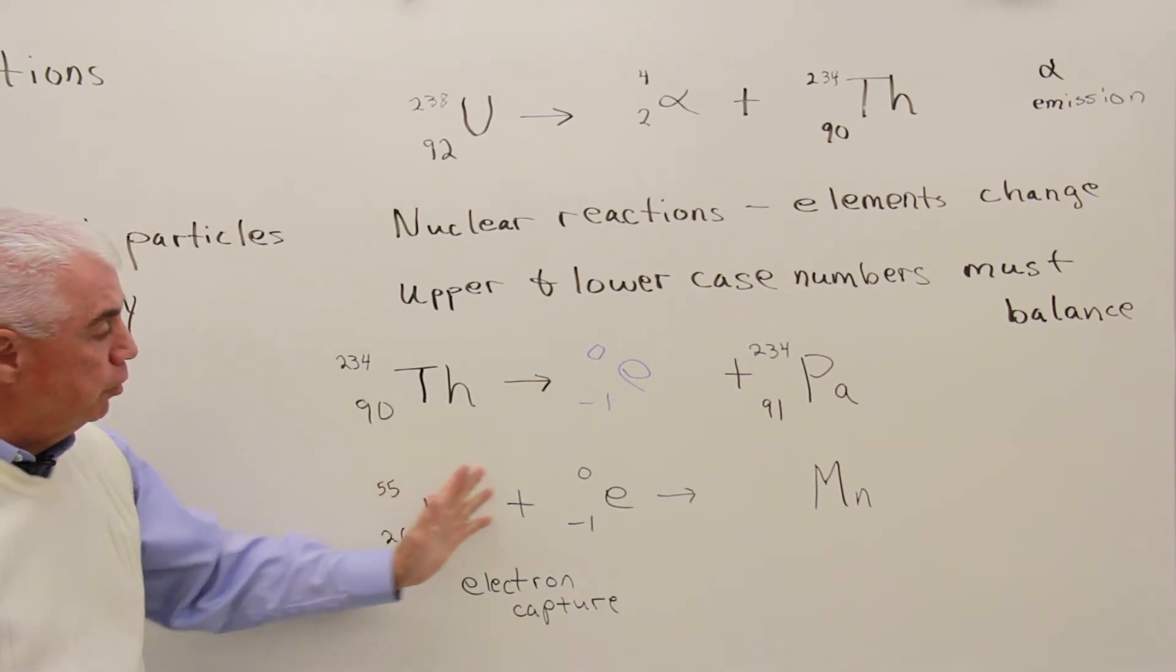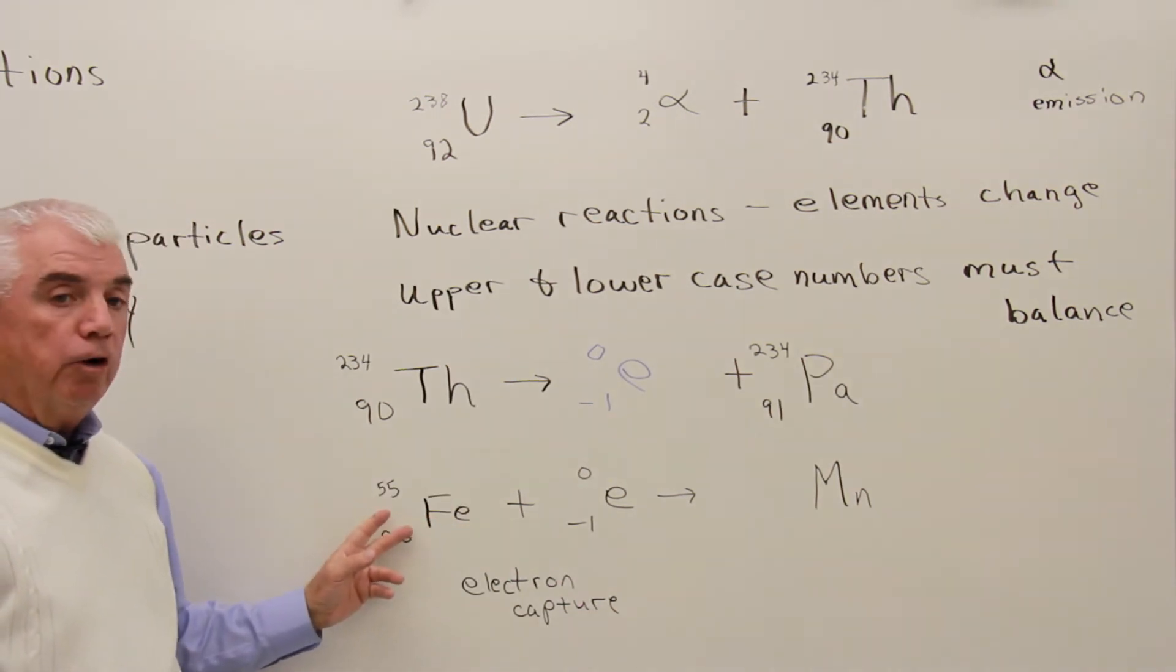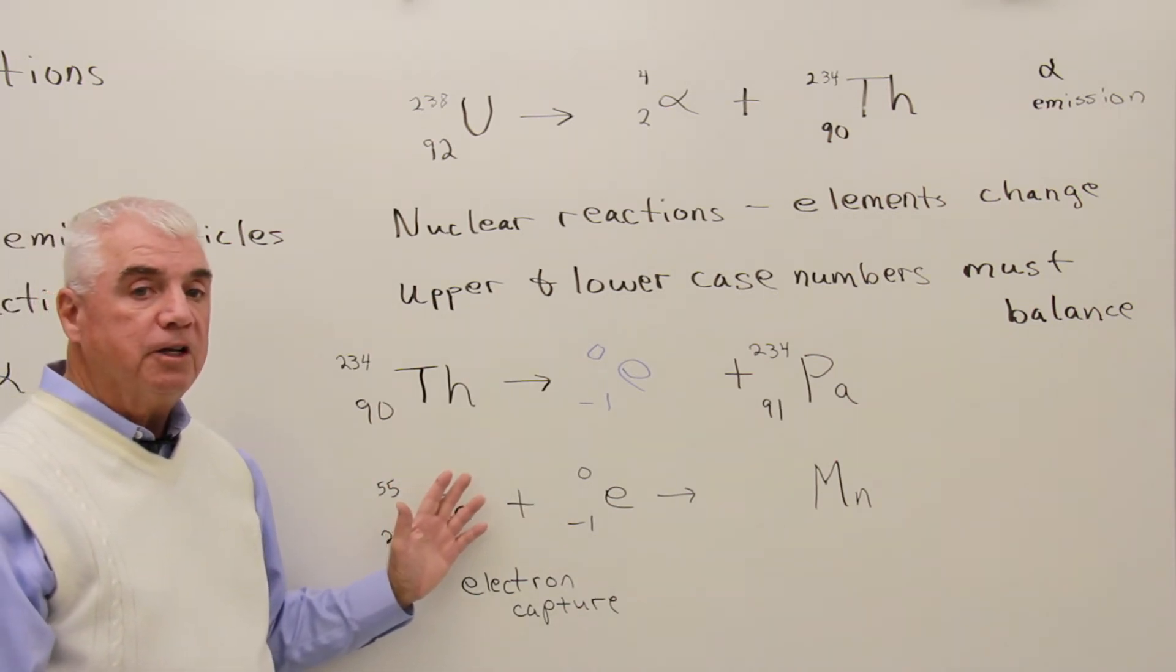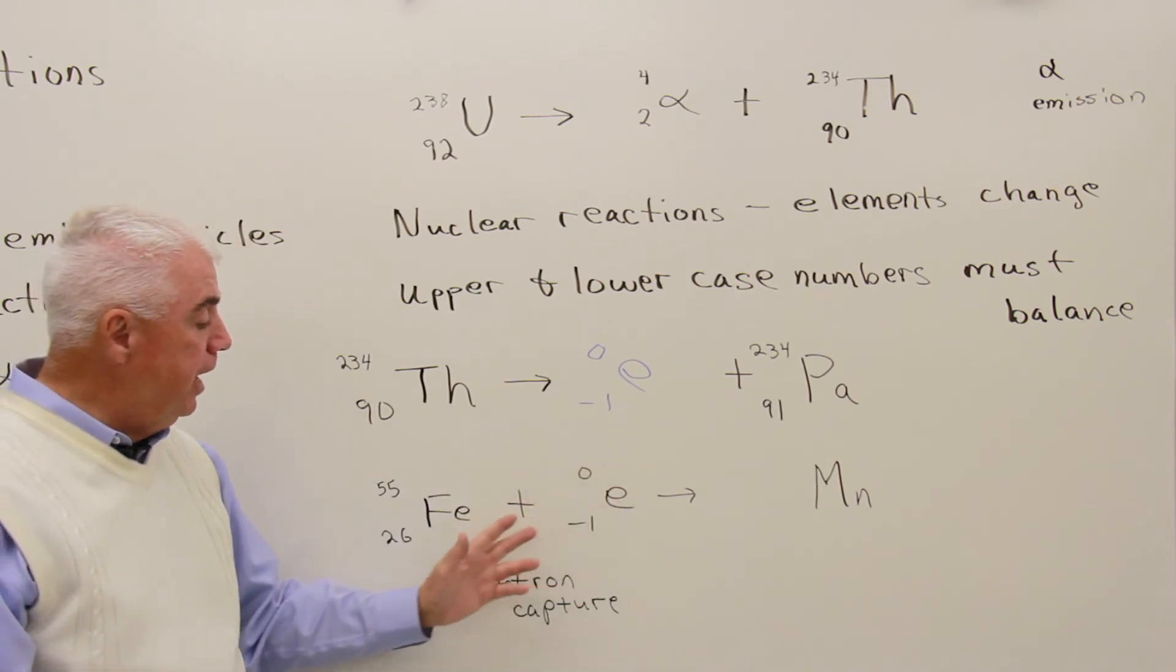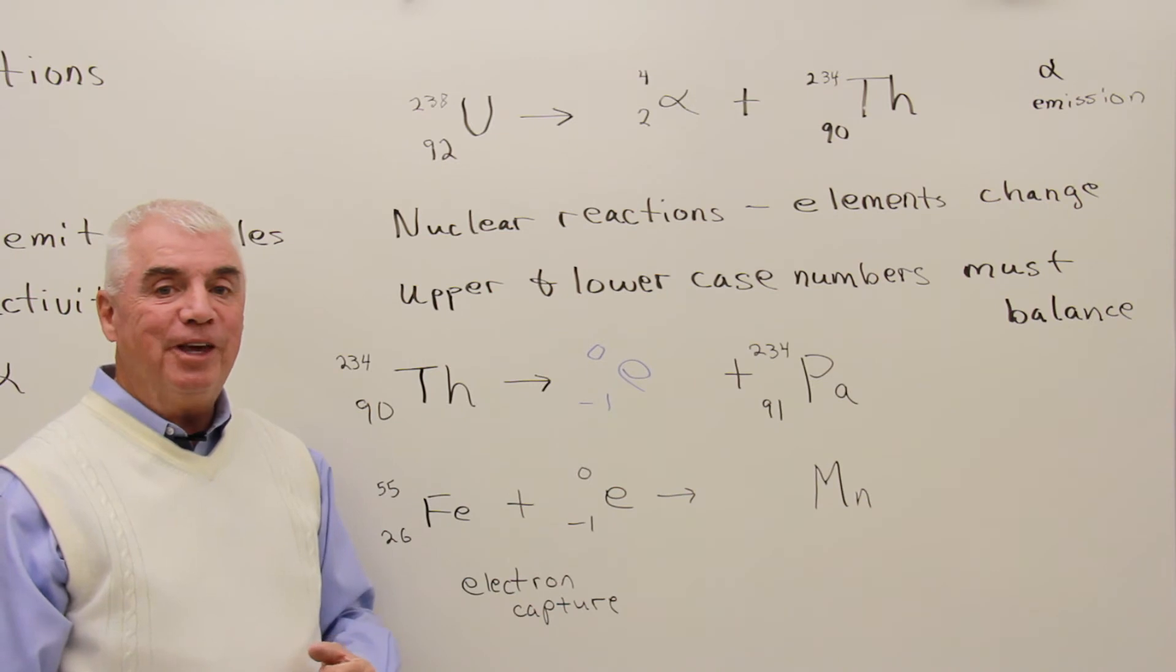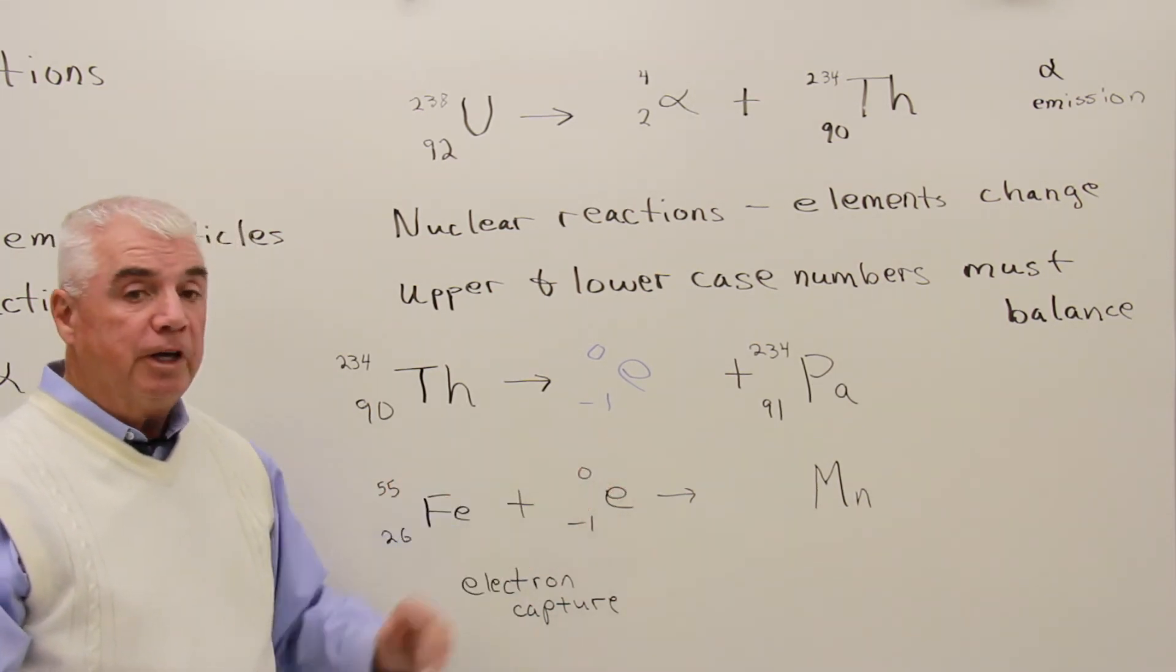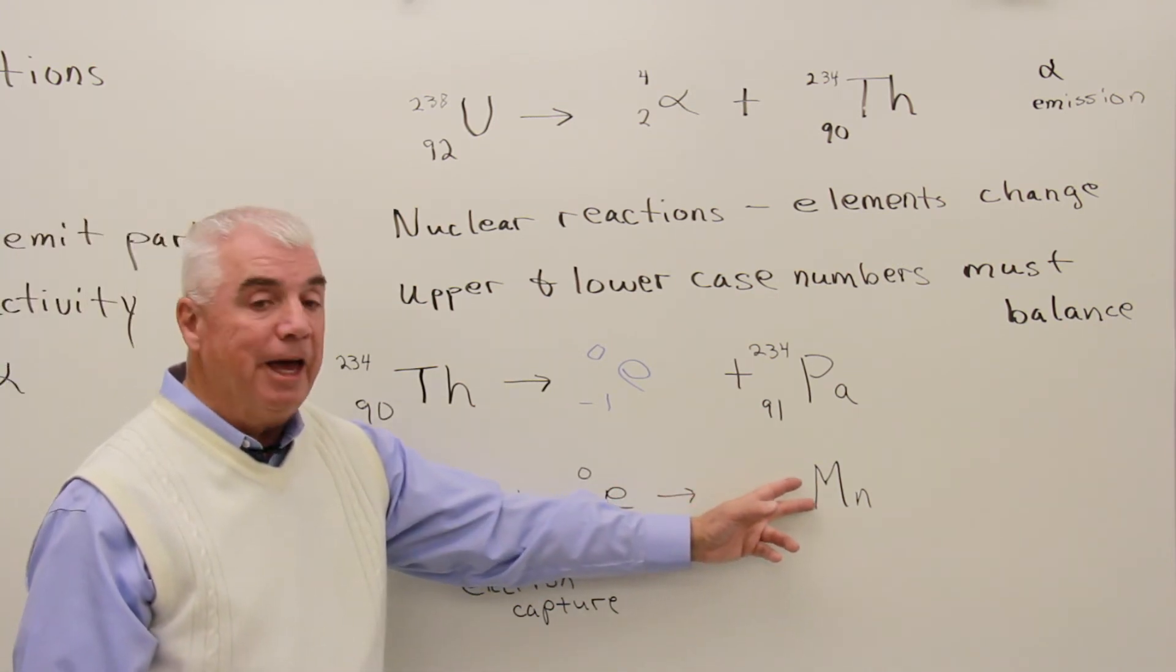Down here's another nuclear process, starting with an iron isotope. Once in a while, it's possible for a nucleus to capture an orbiting electron. And when that occurs, in essence, a proton combines with the electron and changes into a neutron. And in doing so, we get a new element. In this case, iron is changing into manganese.